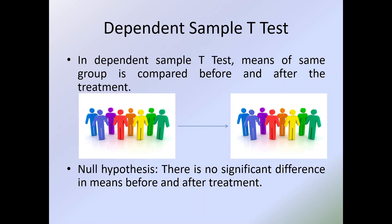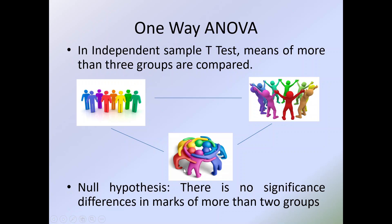The null hypothesis for the paired t-test is there is no significant difference in means before and after the treatment. Now, how is ANOVA different from the t-test? The key difference is that in ANOVA, the number of groups is more than two — it starts from three or can be more than three.